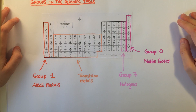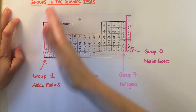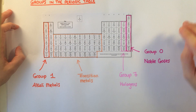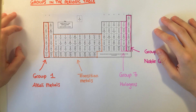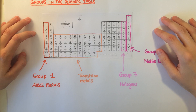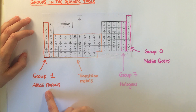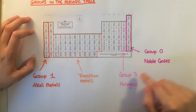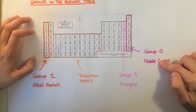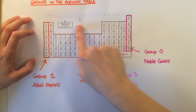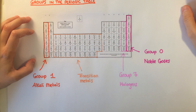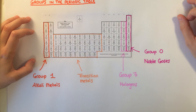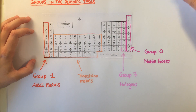We discussed in topic one that the periodic table is arranged into columns or groups that contain elements with similar properties. You need to know more detail about three of these groups: Group 1, the alkali metals; Group 7, halogens; and Group 0, the noble gases. The transition metals are found in a block that contains most of the metals in the periodic table and they all have similar properties.